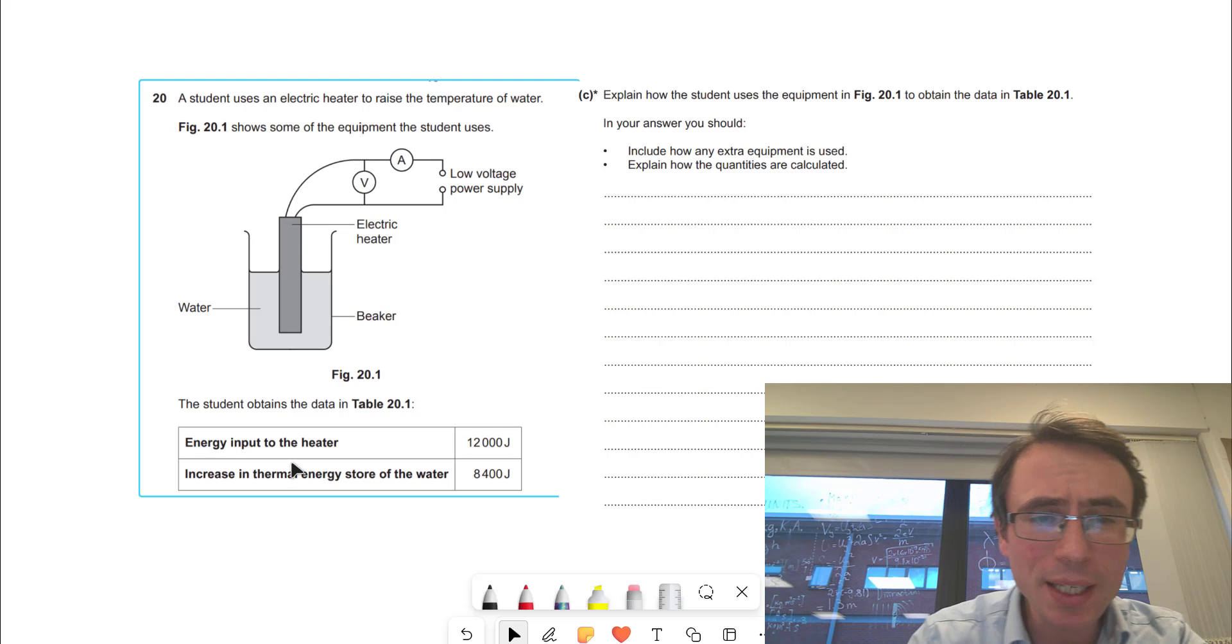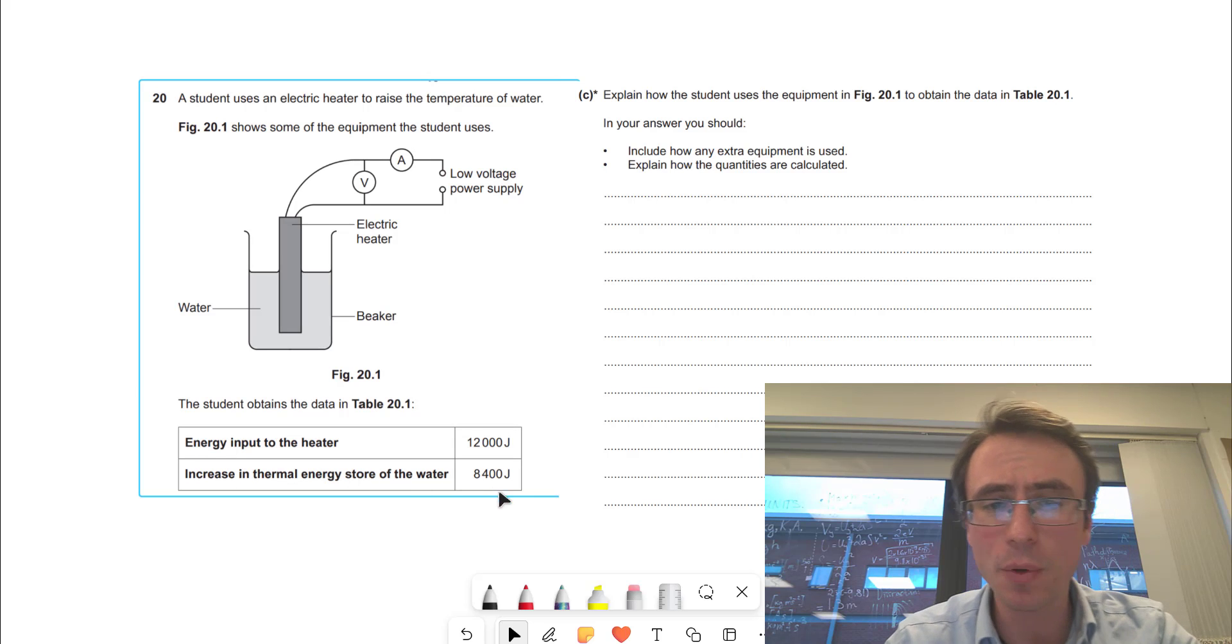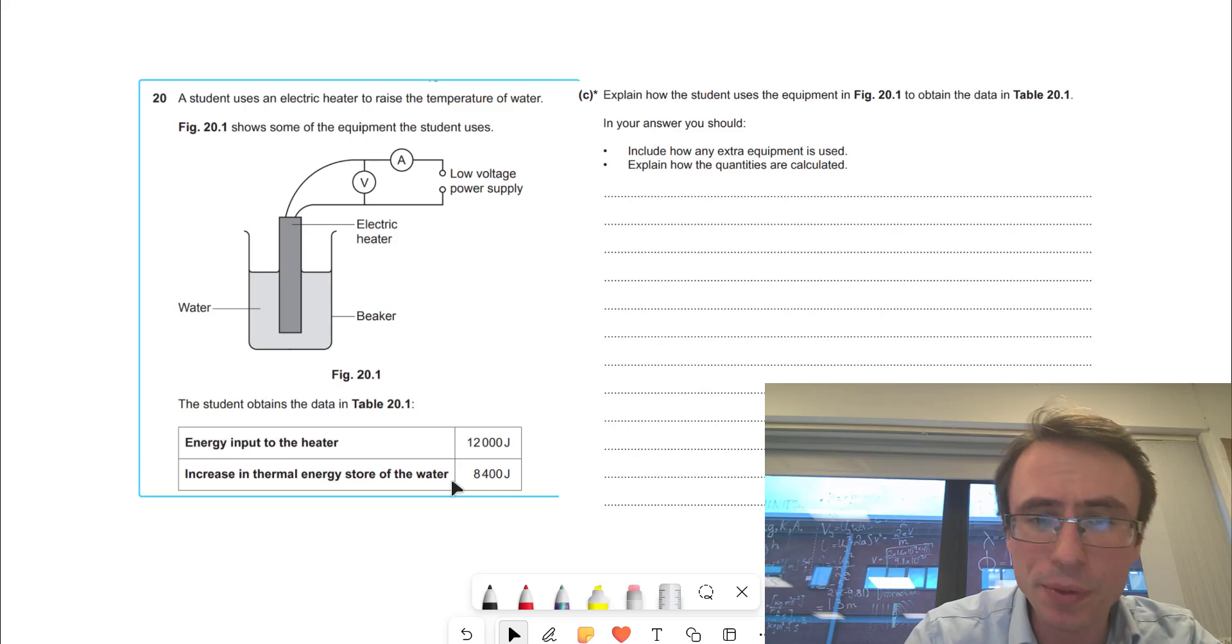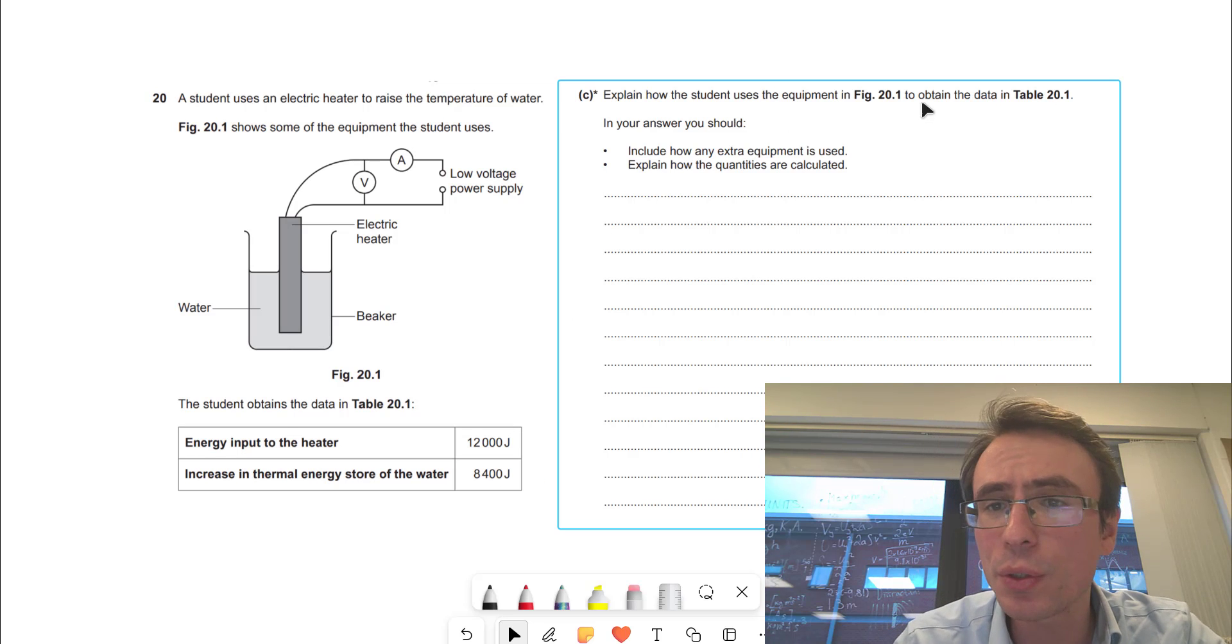We have the following data: the energy input to the heater, which is given as 12,000 joules, and the increase in thermal energy, which is 8,400 joules. Explain how the student uses the equipment to obtain the data.